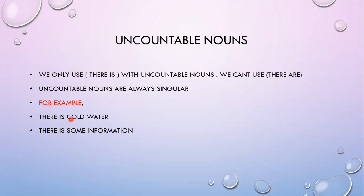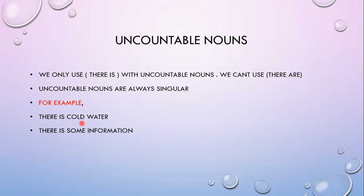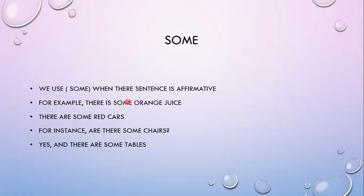Let's see uncountable nouns — الأسماء الغير معدودة. We only use 'there is' with uncountable nouns — بس باستخدم there is، ممنوع أستخدم there are، لأنه there are للجمع والاسم الغير معدود مستحيل يجي جمع. Uncountable nouns are always singular. For example: there is cold water، there is some information. لاحظوا الفرق ما بين there is a car وthere is cold water — كيف عرفت إنه cold water غير معدود؟ لأنه ما سبقت بـ a أو an. إذن الاسم غير المعدود باستخدم له بس there is، بدون a وبدون an.